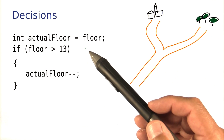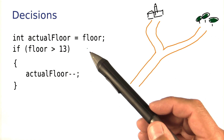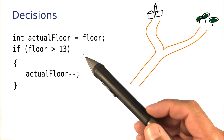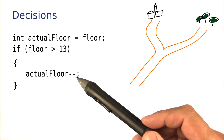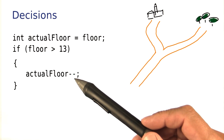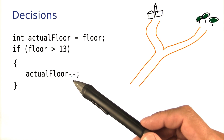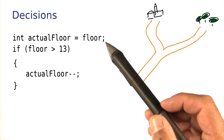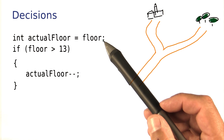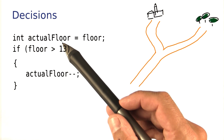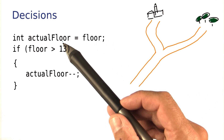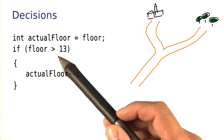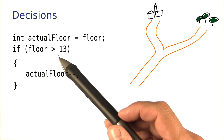Now, sometimes your code is arranged so that you don't actually have a decision to do one thing or another, but the decision is between one thing and nothing at all. For example, over here, I've rearranged the code for computing the actual floor a bit. I'm initializing actual floor with the floor, and then I only need to adjust it if the floor is greater than 13, and otherwise I need to do nothing at all.